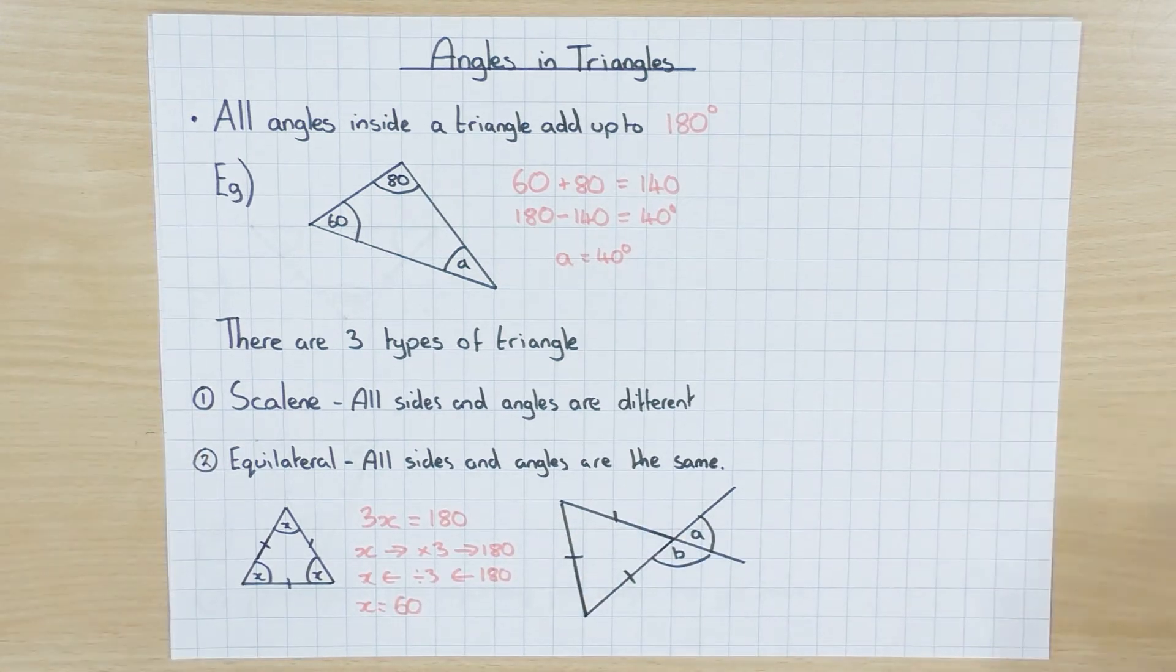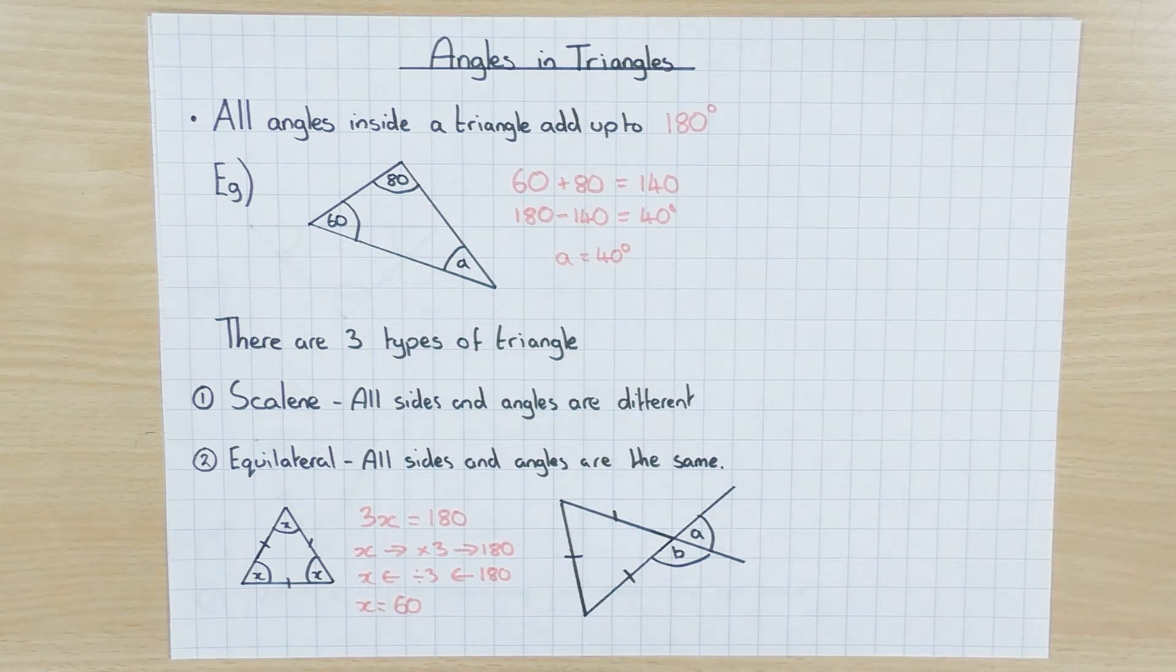So 180 divided by 3 will obviously give me 60. And no matter what the size, no matter what the size of the equilateral triangle, the sides I mean, the angles will always be 60. If you didn't know how to do the flow chart, or you don't know what the balance method is, have a look at my other videos, which explain how to use the flow chart to solve equations, or the balance method to solve equations.